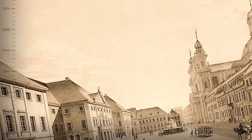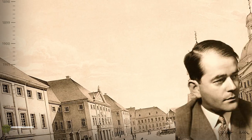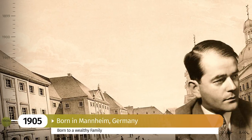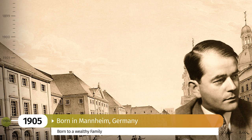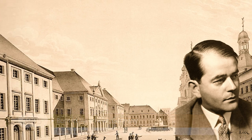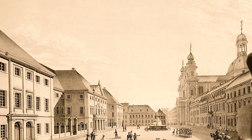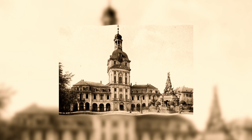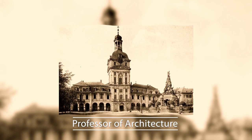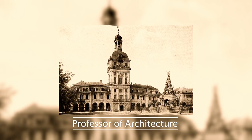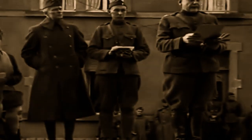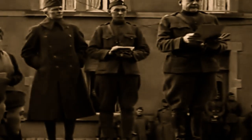Albert Speer, born into a wealthy family in Mannheim in 1905, followed in the footsteps of his father and grandfather by pursuing a career in architecture. After completing his studies, he chose to stay on at the university as a lecturer. Despite his privileged upbringing, Speer was initially uninterested in politics.